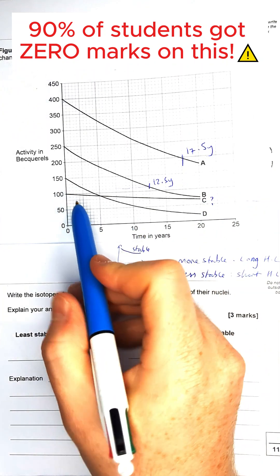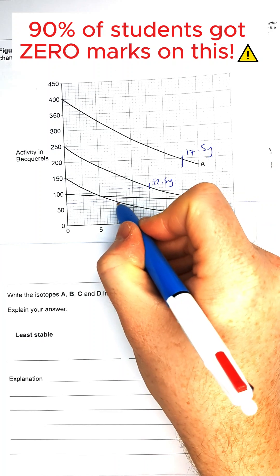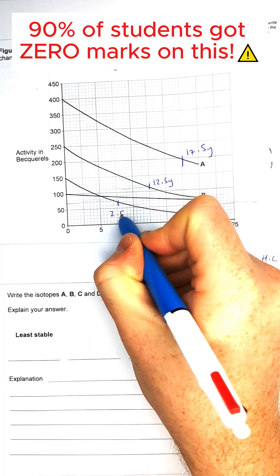And then D goes from 150 to 75, and that takes around about 7.5 years for it to happen.